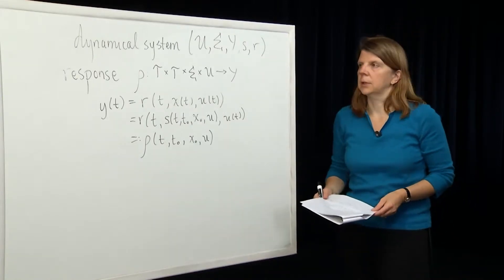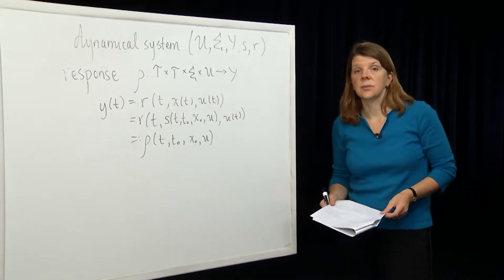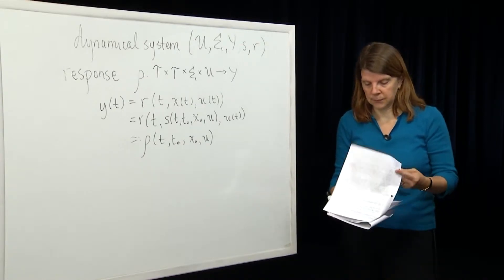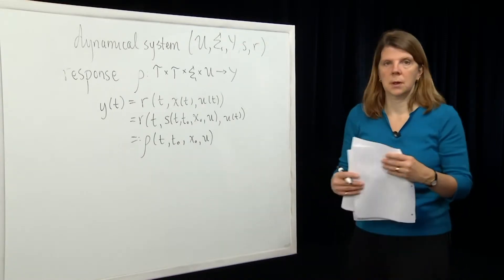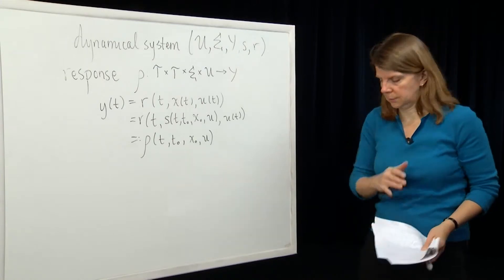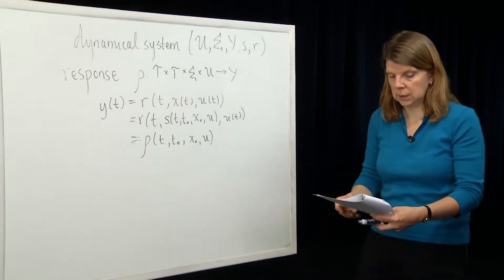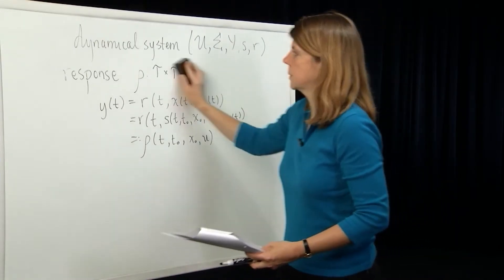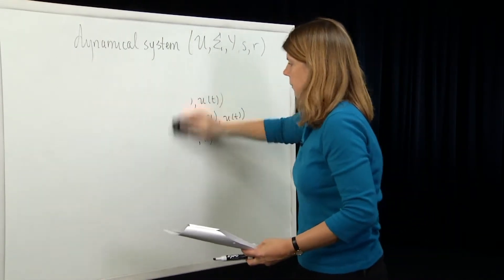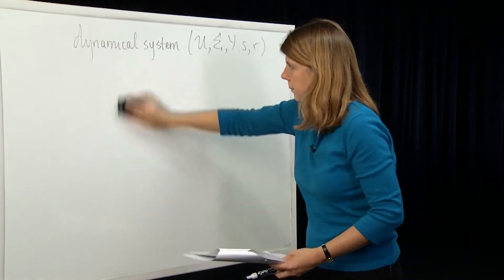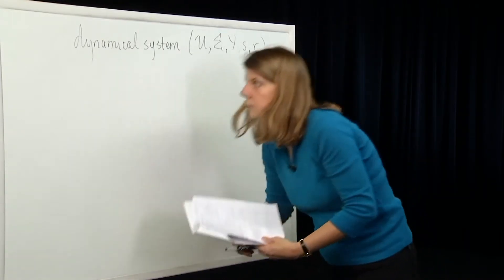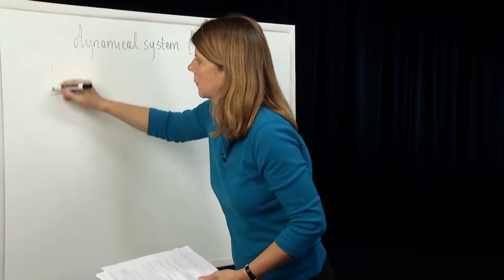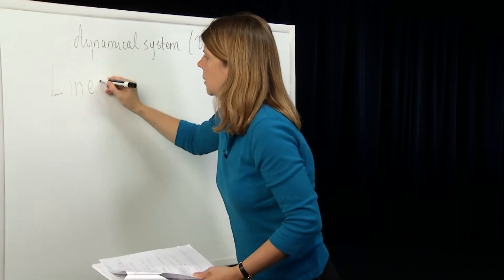Linearity is a property of a dynamical system, and it's defined in terms of the response function of that dynamical system. We've defined the response as the composition of the readout map and the state transition function. Now let's define what we mean by a linear dynamical system.